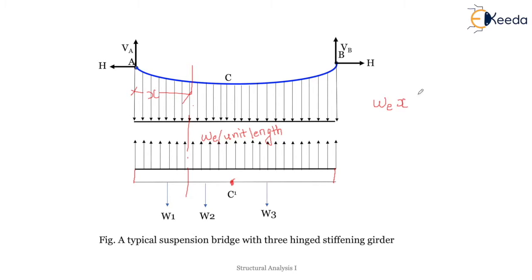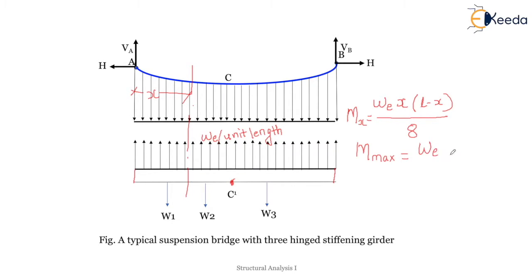The bending moment at any section x due to the UDL is: w_e × x × (L − x) / 8. The maximum moment is w_e × L² / 8. You can relate this to a simply supported beam with uniformly distributed load from your previous subject.